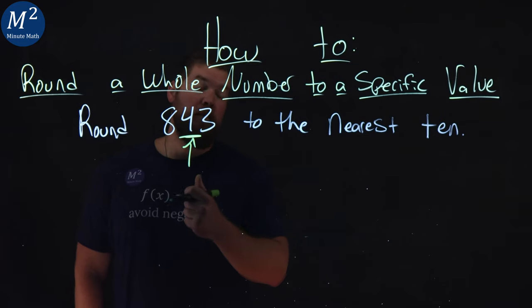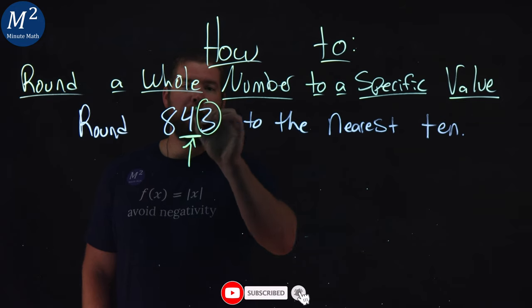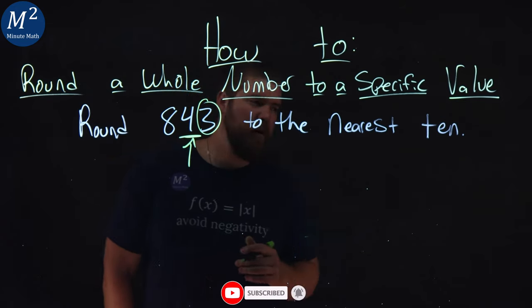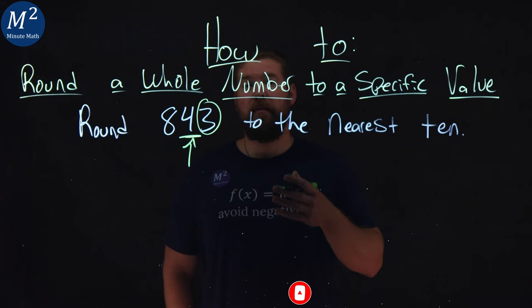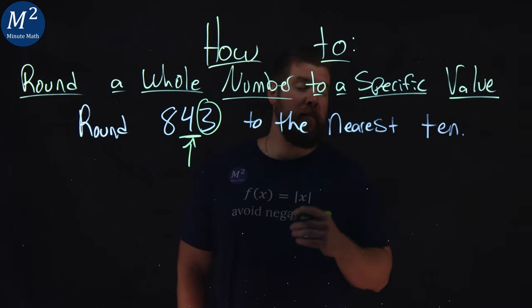We then need to look to the number to the right of that place value, which is the 3. That number 3 we ask ourselves, is it between 0 and 4, including the values, or 5 through 9, including the values?